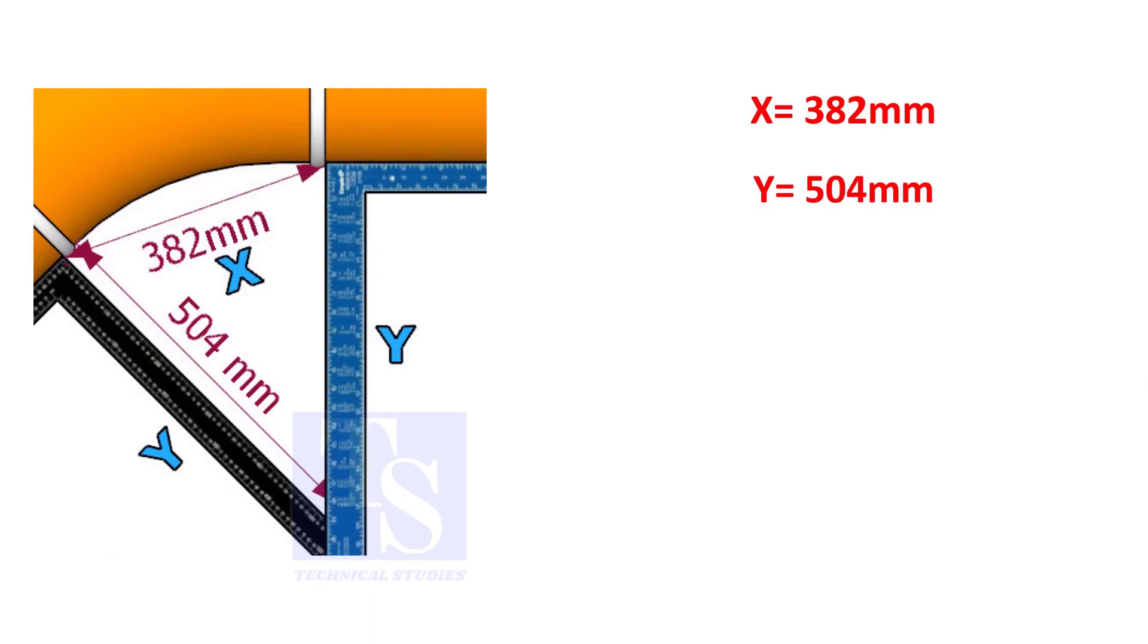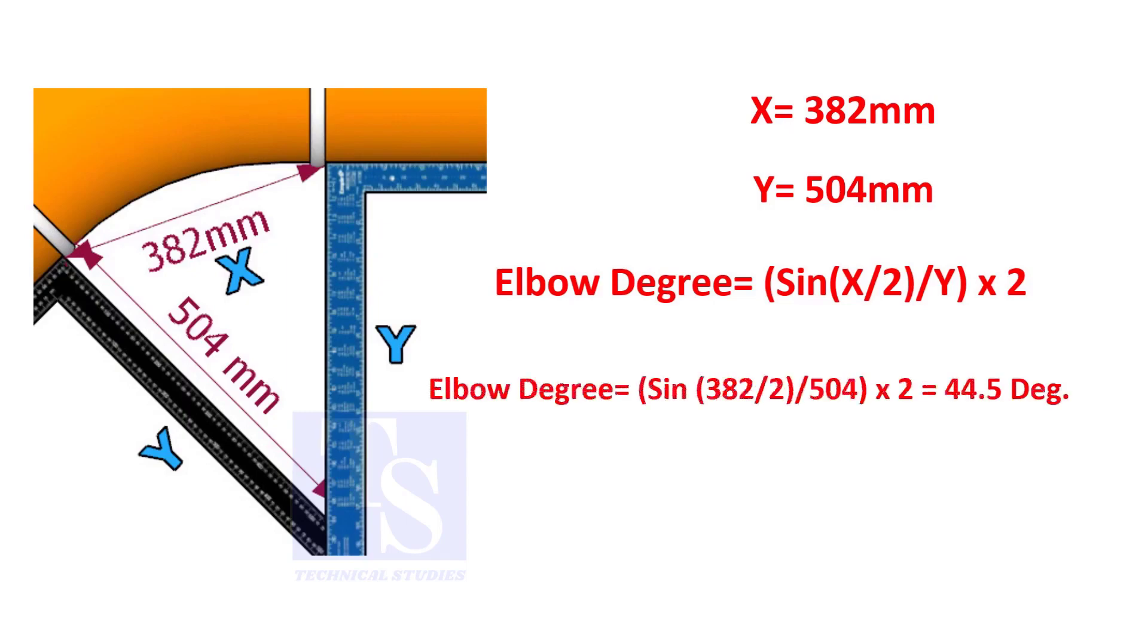Assume that the value of x is 382 and the value of y is 504. Divide the half value of 382 by 504 and convert the value to sine, then multiply by 2.